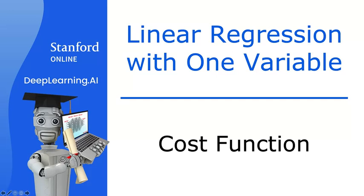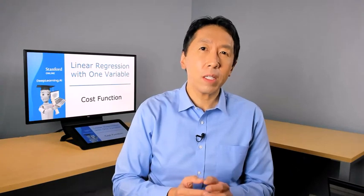In order to implement linear regression, the first key step is to define something called a cost function. This is something we'll build in this video, and the cost function will tell us how well the model is doing so that we can try to get it to do better.